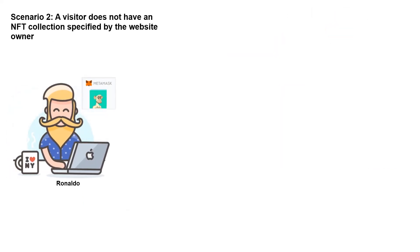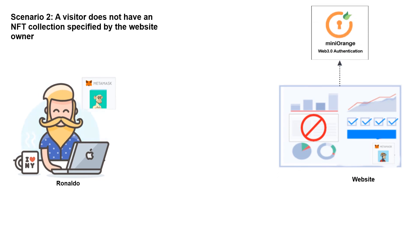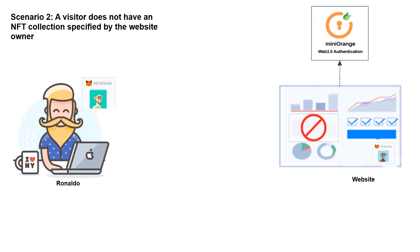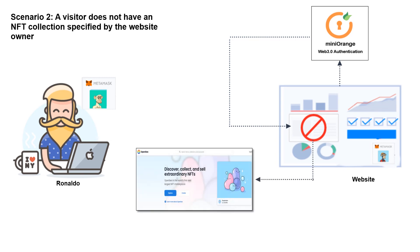Similarly, in scenario 2, Ronaldo logs into the website using MetaMask but does not hold the required NFT collection in the wallet. After the miniOrange Web 3.0 authentication plugin verifies the ownership of the wallet, since Ronaldo does not have the required NFT collection, he will not be able to access the restricted content. Instead, he will be redirected to the NFT marketplace.